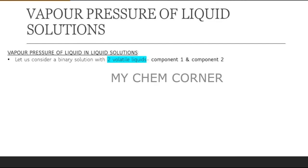We are considering vapor pressure of liquid in liquid solutions where both liquids are volatile. We're taking two liquids — component one and component two — and considering them to be volatile. A volatile liquid is any liquid that vaporizes when kept open in air. For example, acetone and ethanol both vaporize when left open.